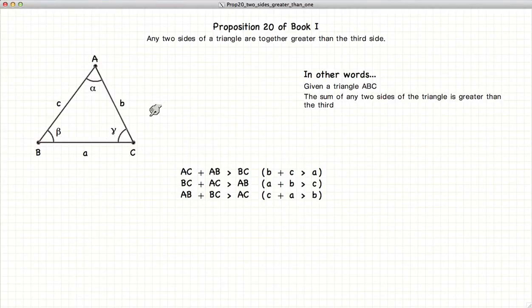which states that for any given triangle, if you sum two of the sides together, they will be greater than the third. So a plus b will be greater than c, b plus c will be greater than a, c plus a will be greater than b.